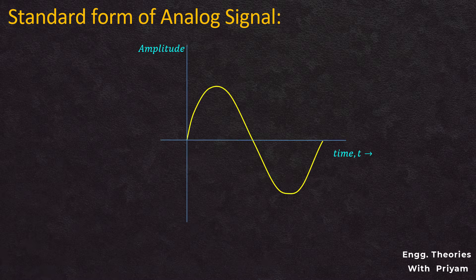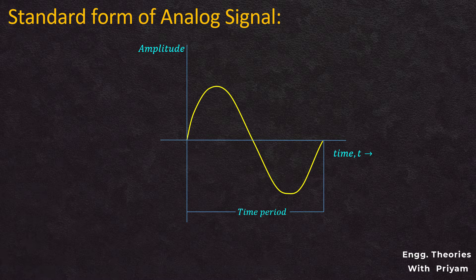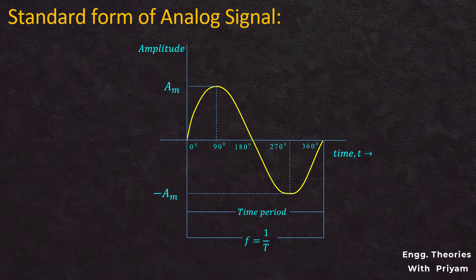A real-life example of the analog signal is the representation of human voice, as this voice signal varies continuously with time. One of the standard forms of analog signal is a sinusoidal signal — a continuous time-varying signal because during its time period the value of the signal is available for every instant of time. The sinusoidal signal has certain amplitude, phase, and frequency, and changes from positive maximum value to negative maximum value and back.